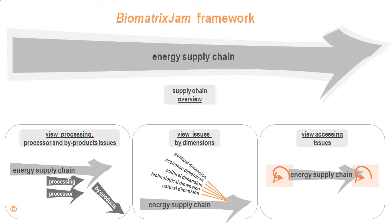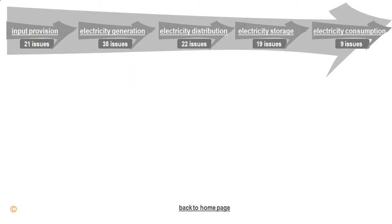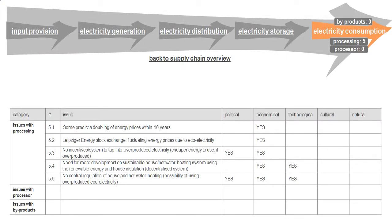Let us have a look at the issues categorized by processing, processor, and by-products. Here we can choose which part of the supply chain we want to zoom into. By clicking on electricity consumption, we can look at the list of the issues in that particular area. Some of the issues highlighted in the documentaries were related to processing: prediction of doubling of energy prices within the next 10 years, lack of incentives to tap into overproduced electricity, and so on. We can see that there are a number of blank boxes that need filling in by relevant stakeholders.